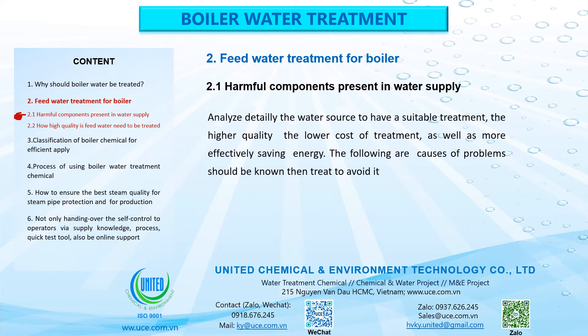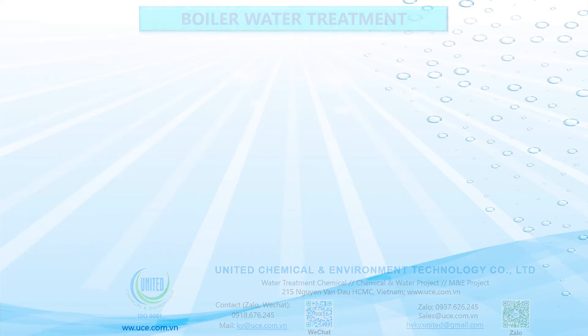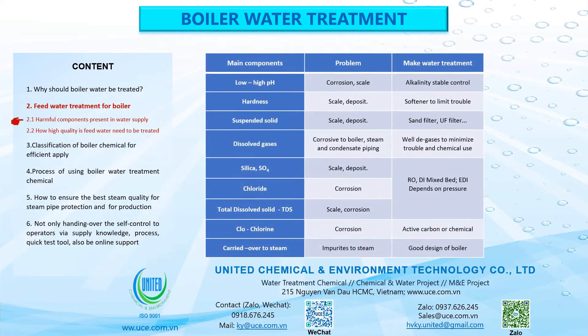2. Feed water treatment for boiler. Harmful components present in water supply should be analyzed in detail to have a suitable treatment. The higher the quality, the lower the cost of treatment, and the more effective the energy savings. The following causes of problems should be known and treated to avoid issues. 1. Main component: Low or high pH. Problem: corrosion and scale. Water treatment should include alkalinity stable control.